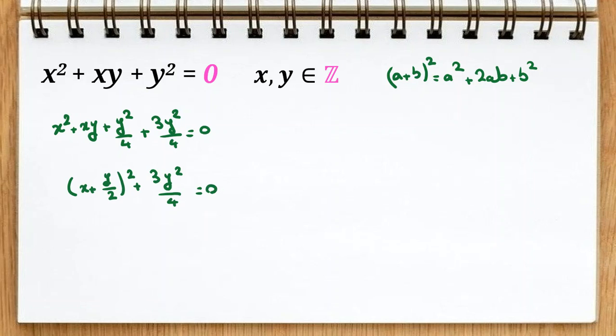Now it has two parts. Sum of two non-negative numbers equal to zero. Each of them at least zero. So each part is zero.